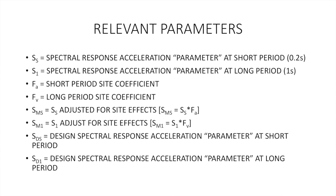Next, we have the short period site coefficient and the long period site coefficient, FA and FV. These adjust the spectral response acceleration parameters for your particular site's local conditions. The spectral response accelerations given from code at the short and long period have already been adjusted for risk — they are maximum considered earthquake ground motions for a risk target such as 2% risk of exceedance in 50 years. SMS and SM1 are those accelerations adjusted for the site coefficients. Then your design spectral response accelerations SDS and SD1 are determined by code as 2/3 of SMS and 2/3 of SM1, respectively.